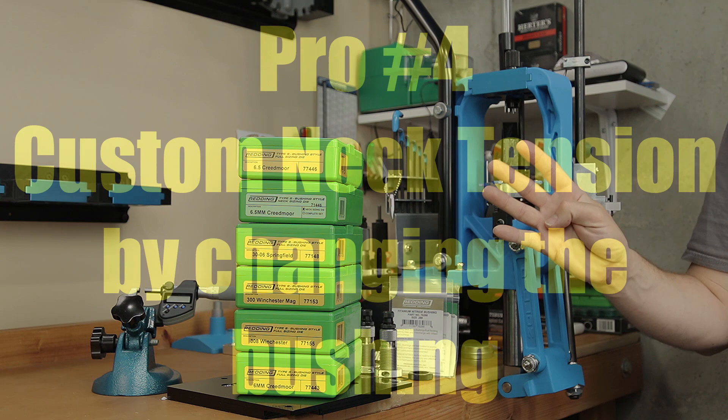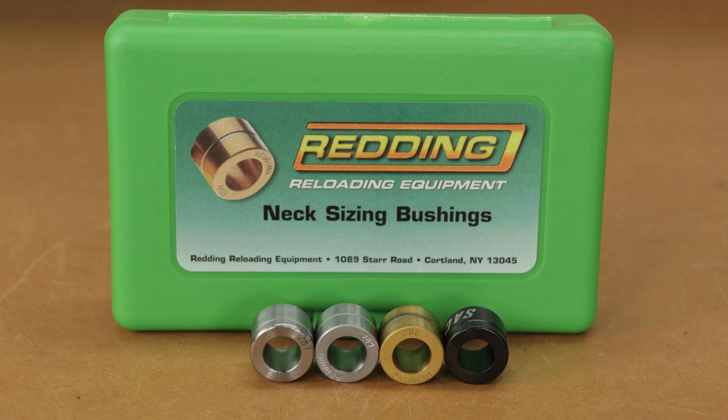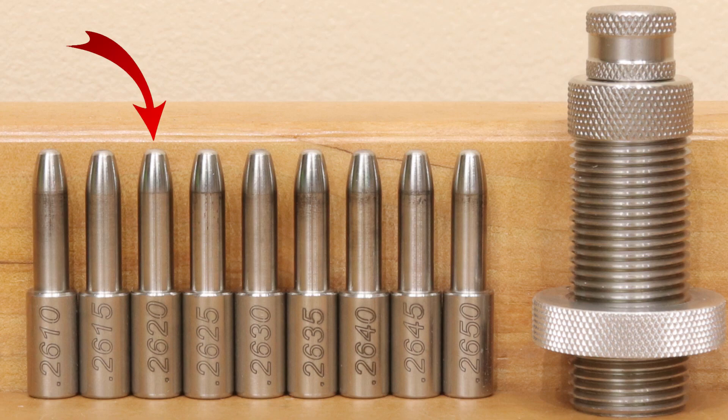The fourth reason to get the S-Die is you can change bushing sizes and vary your neck tension. Again, you're paying $20 or so per unit for the privilege, but you can customize the neck tension to your liking. Now personally, I like to set my final dimension with the expander mandrel, but it's up to you.